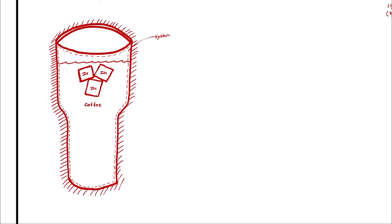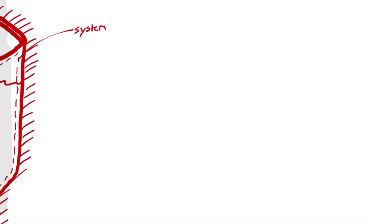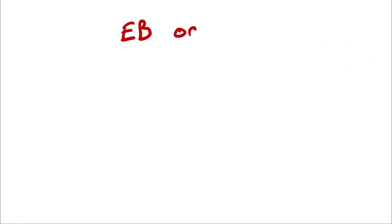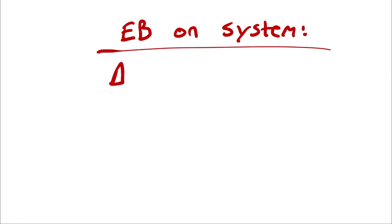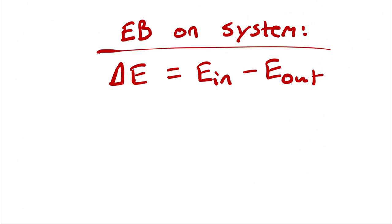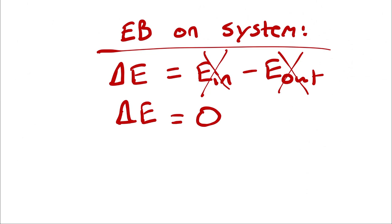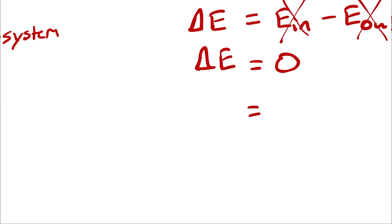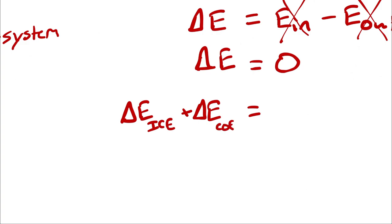Now that I've got my system defined, I can begin an energy balance on the system. I begin with delta E is equal to energy in minus energy out. For an isolated system, there are no opportunities for energy to cross the boundary. Therefore, E in and E out are both zero, and delta E is equal to zero. But remember that we are defining our system as both coffee and ice, meaning if I were to split the delta E into both components, delta E of the ice plus delta E of the coffee must equal zero.